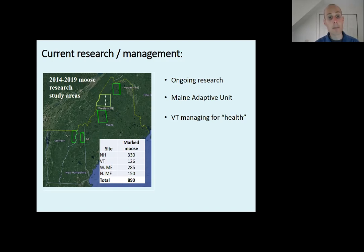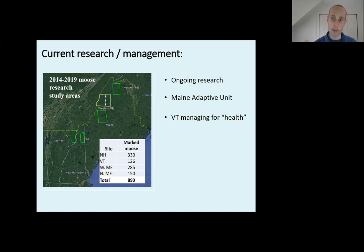Vermont is managing moose in their Northeast Kingdom management units E1 and E2 for healthy moose, increasing moose hunting permits to try to maintain a relatively moderate to low moose abundance in an effort to have lower winter tick impact. In New Hampshire, we are having internal discussions about our approach and communicating with the public about what we know from this research and formulating our next management suggestions. I really appreciate the opportunity to speak here tonight and know that we are working to understand what's best for New Hampshire.